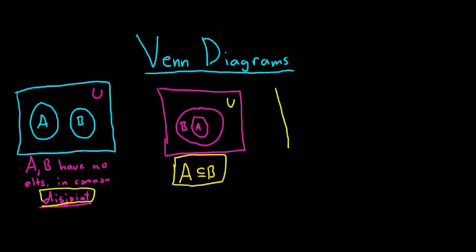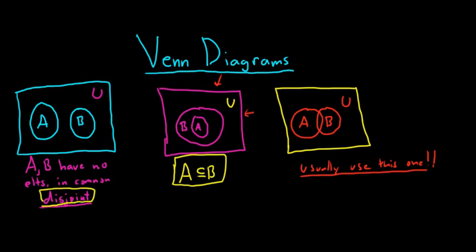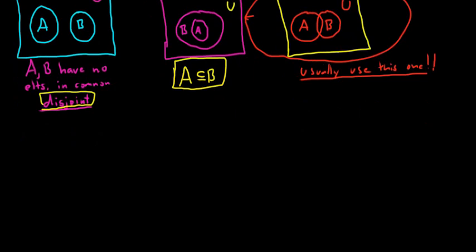The third picture is probably the most instructive, and it's the one we typically always use. Here we have our universal set U as the rectangle, and then A and B as two overlapping circles. This is a generic picture that can describe almost any situation. We usually use this one, and I'll explain why as we go through some definitions. Now let's talk about set operations, and we'll use Venn diagrams to help us.